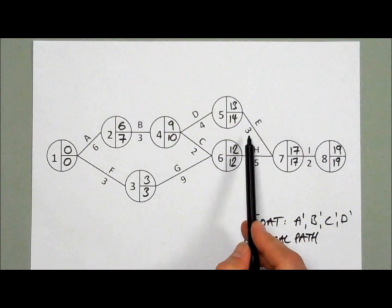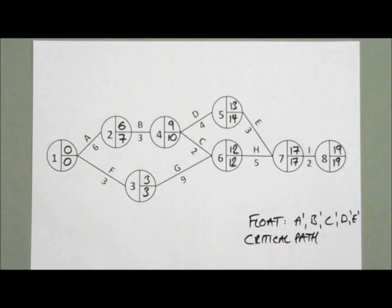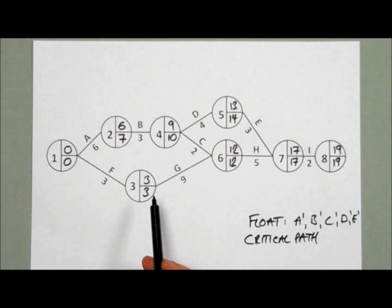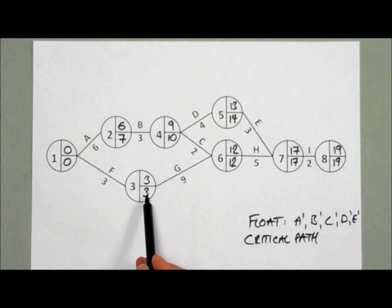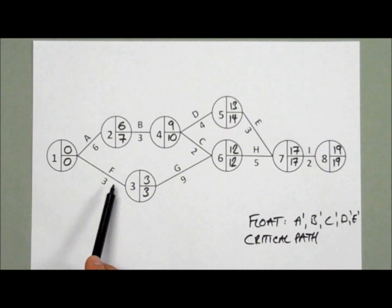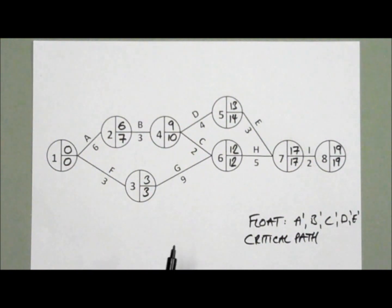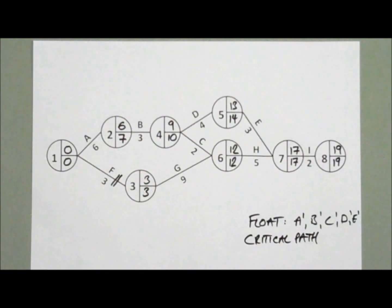Activity E: 17 minus 3 is 14, minus 13 leaves us with 4 - so E has 4 weeks of float. Now let's go to the bottom. Activity F: the latest finish time is 3 weeks, it takes 3 weeks, so 3 minus 3 is 0, and it must start from 0 - so there's no float here. This is going to be a critical task. I'm going to mark it with a line, and that's how we show it's critical.